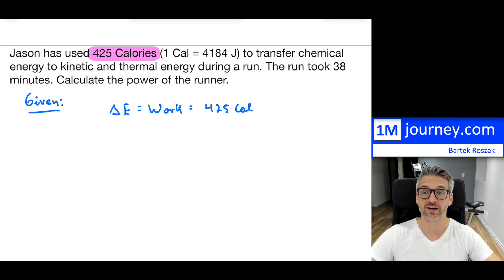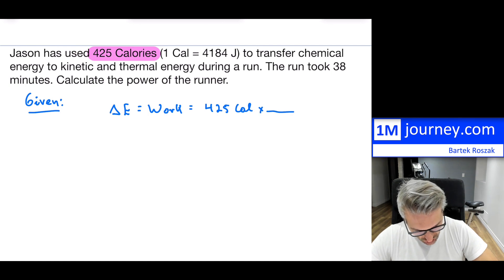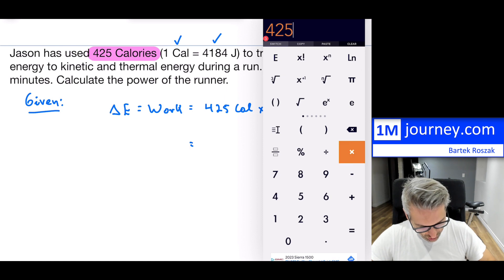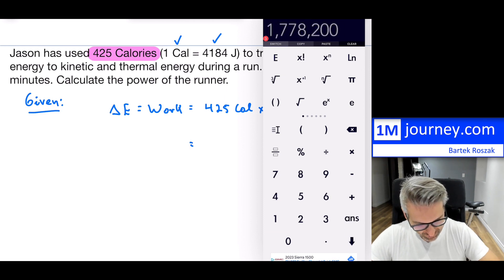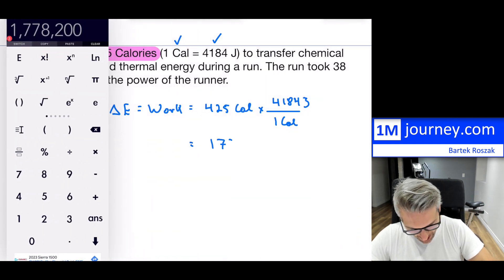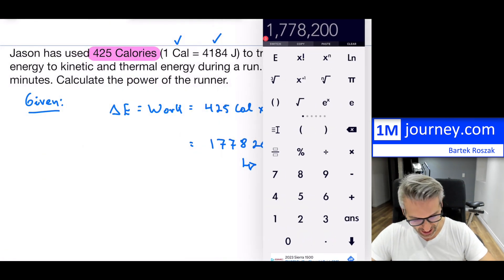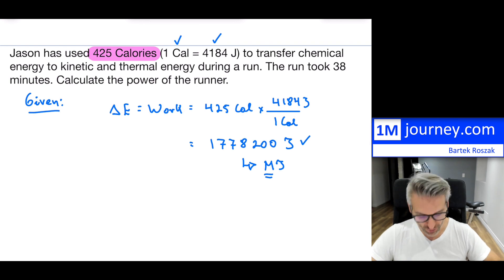This is the given information, the total amount of energy that has been transferred, 425 calories. That is the change in energy or the amount of work the runner had to do. That 425 calories is not in our SI unit, so we need to change this up. One calorie equals 4184 joules. I'm gonna use that conversion so I am all in standard units. 425 multiplied by 4184, which is quite a lot. I'm not gonna do any rounding yet. This is in megajoules now, but I'll keep it in joules.